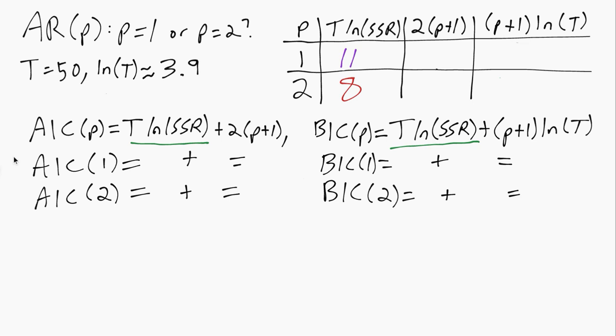There's also other formulations of AIC and BIC for different types of models, but this is the one we are using here. So what we need to do first is fill in this table up in the top right, and then we'll be able to plug those numbers into the formulas down below. So I've already filled in that fit column T log SSR, and now we can fill in the penalties.